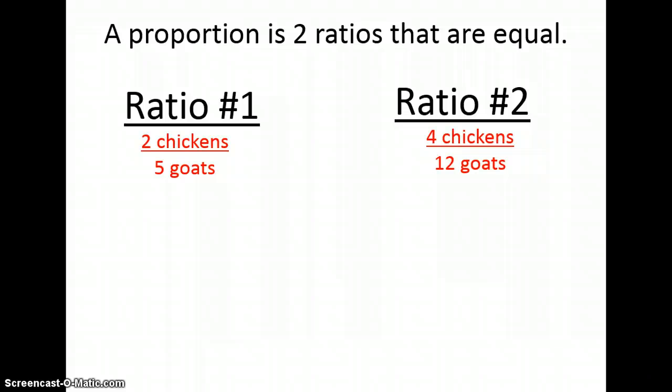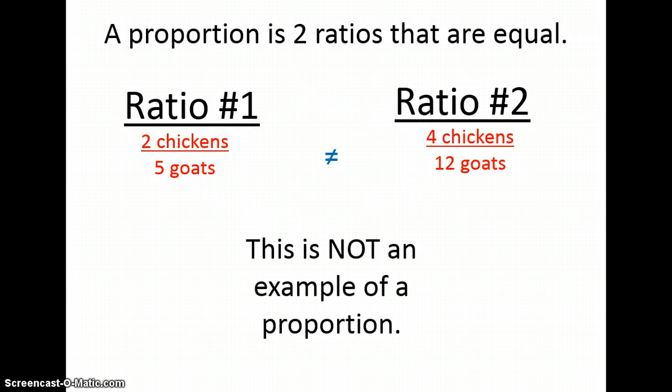Let's look at this one. How do I get from two to four? Well, that's simple. I multiply by two. But when I come down here and multiply five times two, that gives me ten and not twelve. Therefore, this is not an example of a proportion. Also, I can't simplify four to twelve to get two-fifths. I would get two to six.